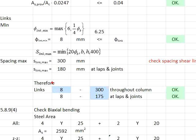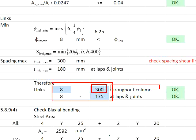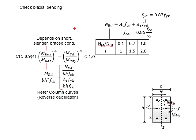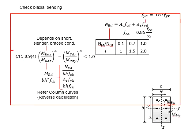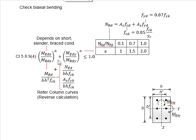Now your shear links need to be 8 mm at 300 mm spacing throughout the column. At the joint, you can provide 170 mm spacing. Next, you will need to check for biaxial bending based on Eurocode clause 5.8.9. Based on these formulas, you have the MEd in the z and y axes obtained from your previous calculations.